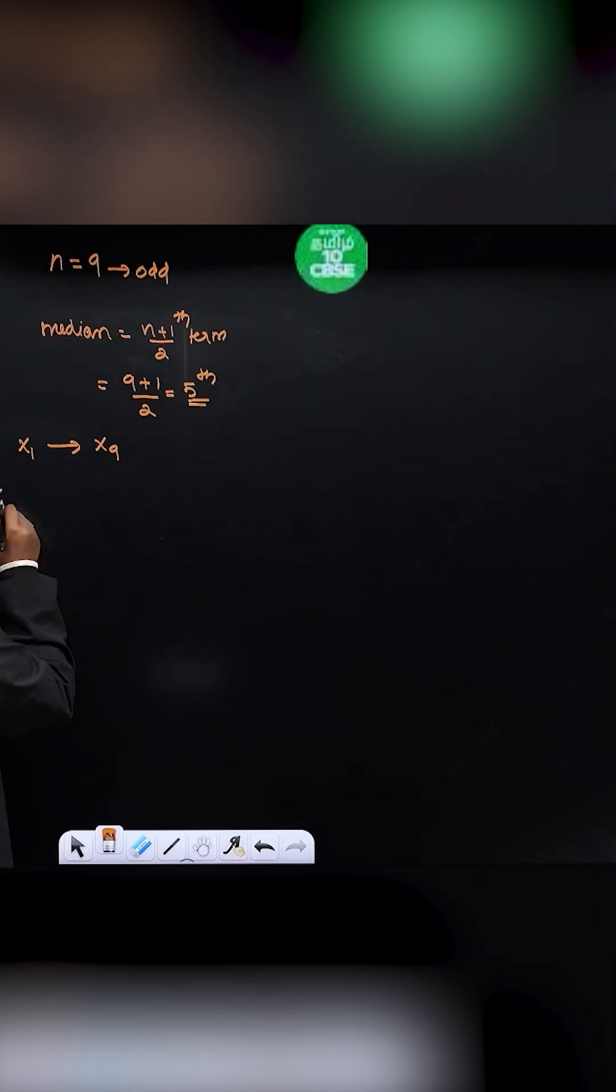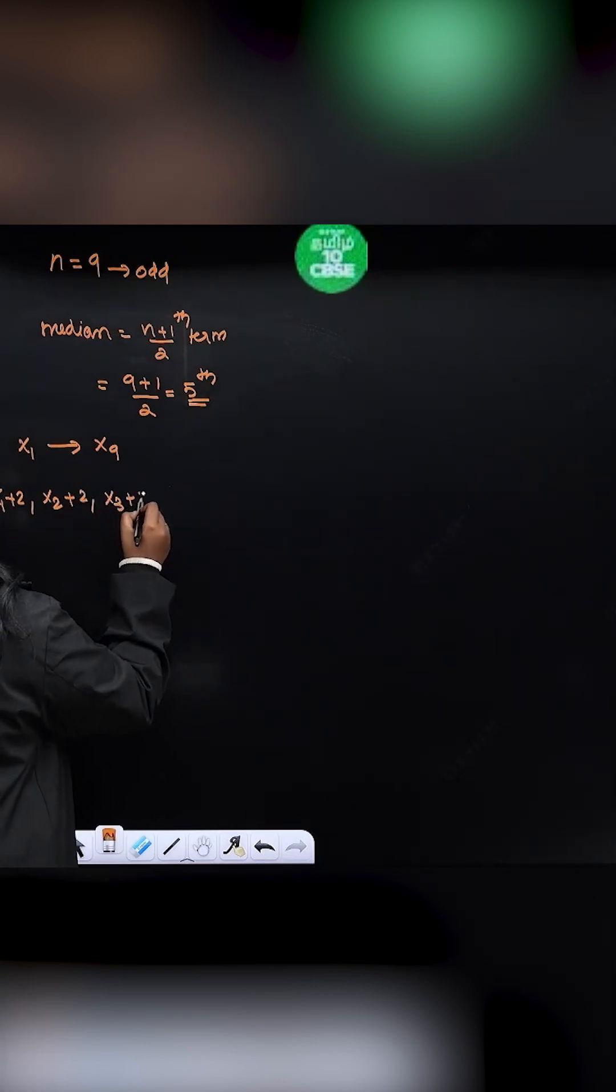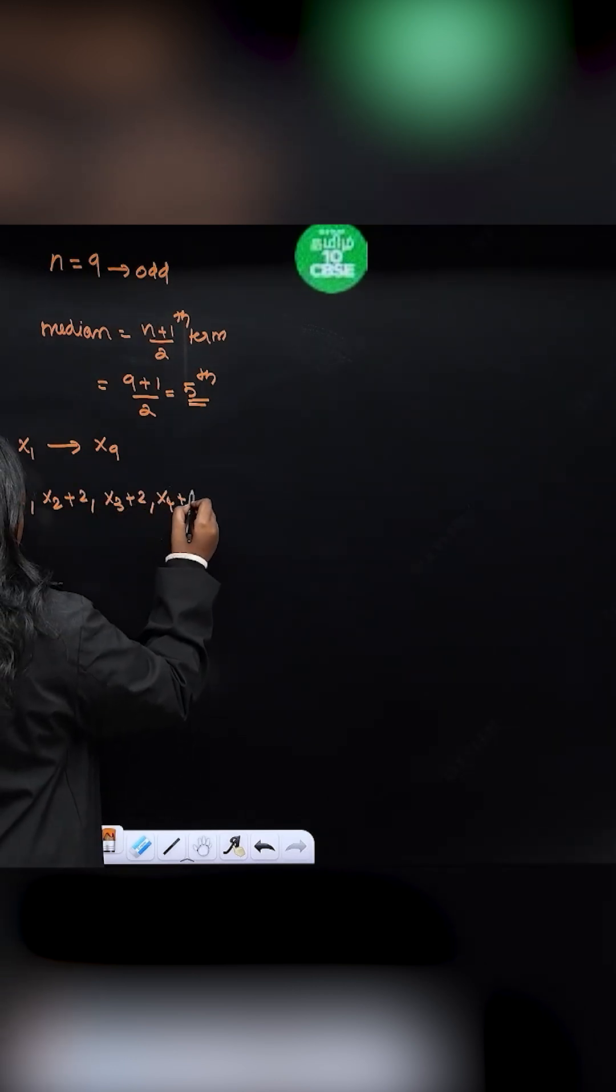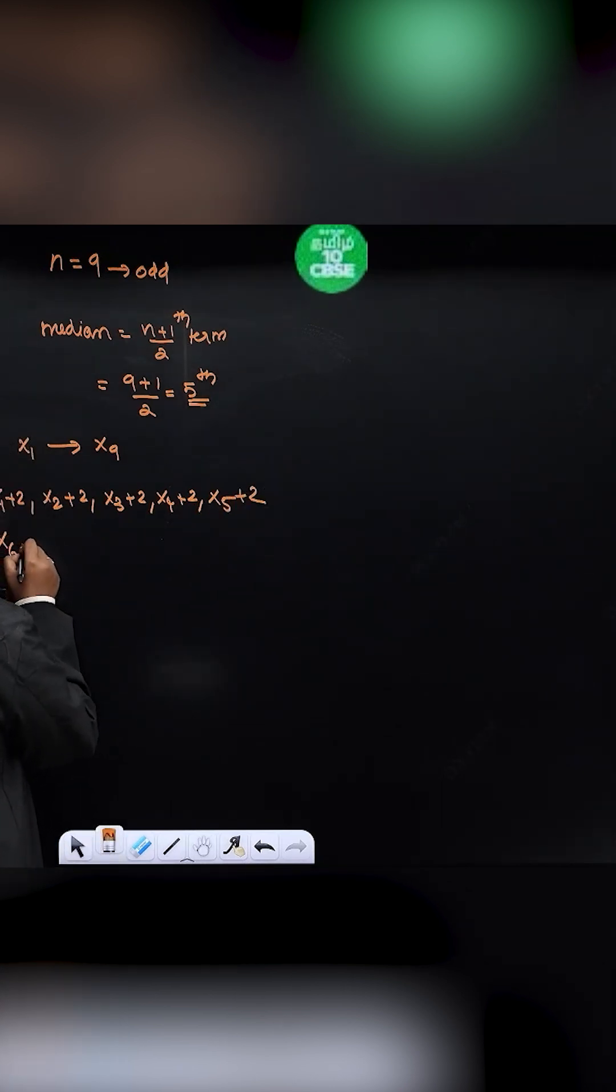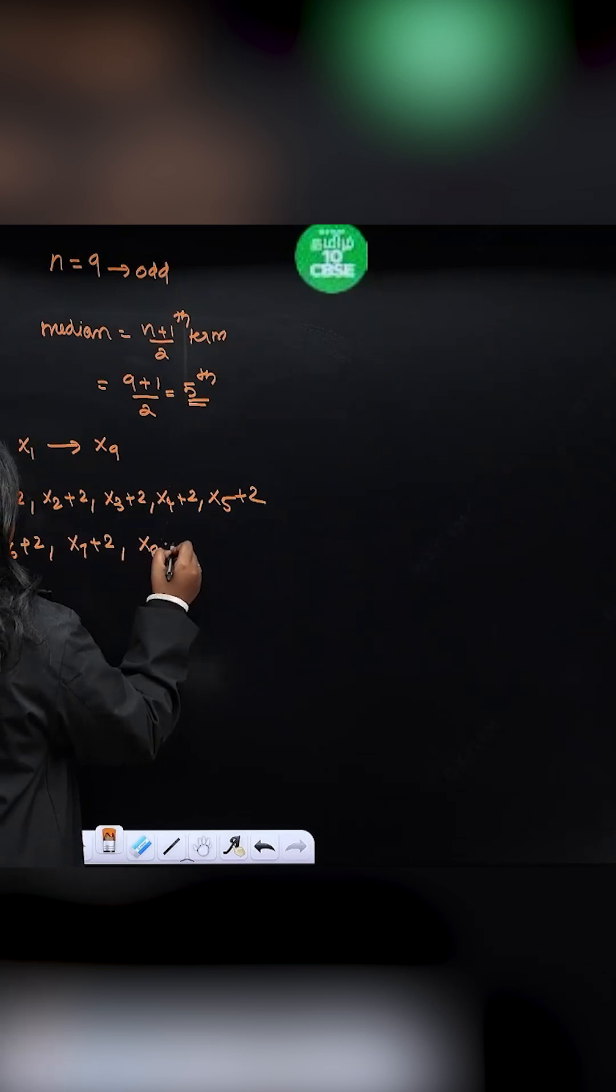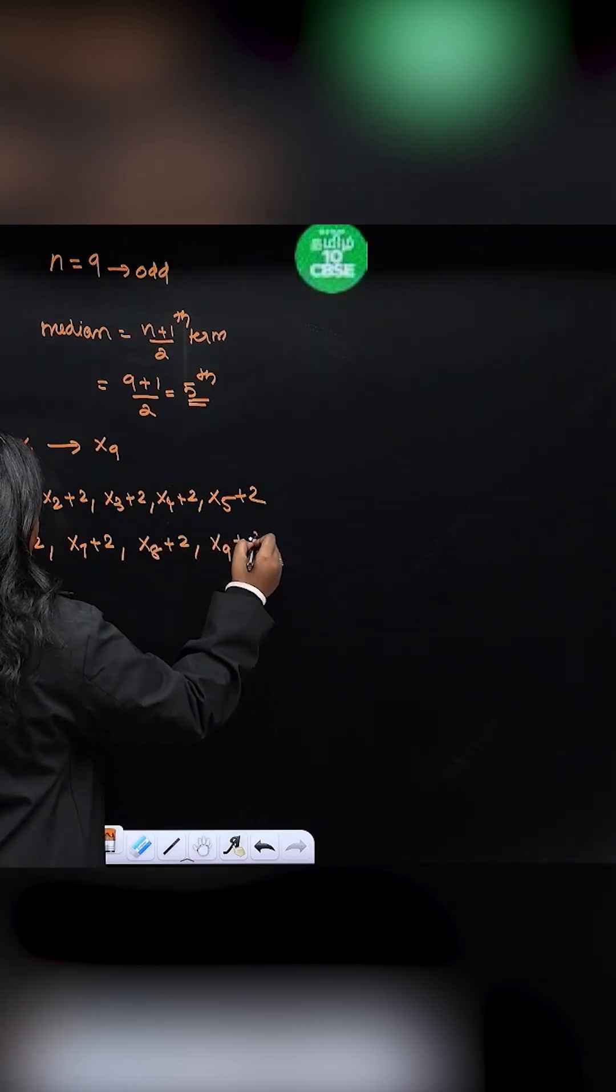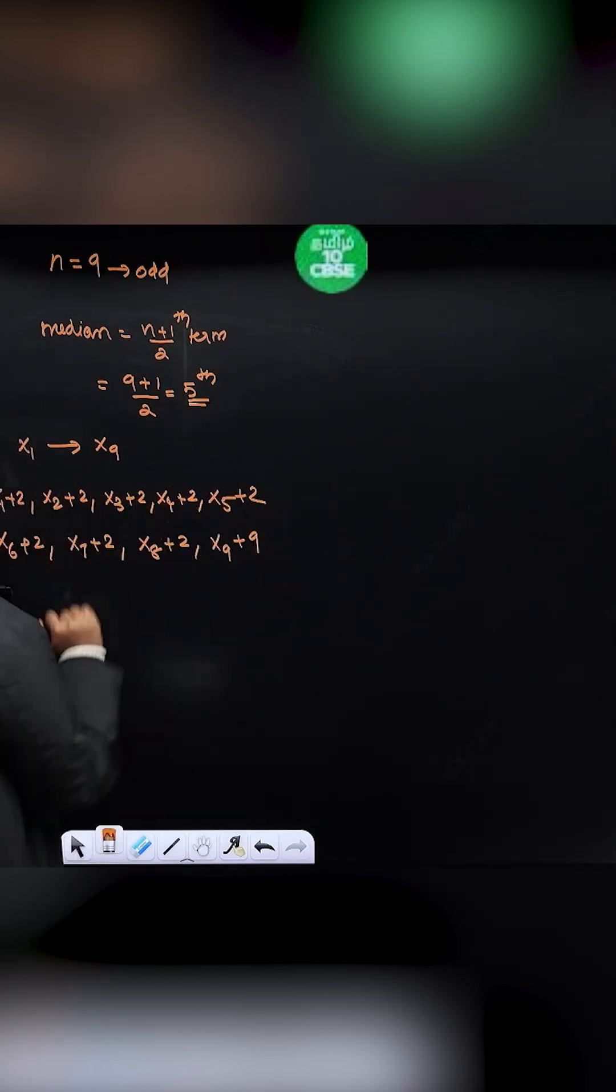So you have x1 plus 2, x2 plus 2, x3 plus 2, x4 plus 2, x5 plus 2, x6 plus 2, x7 plus 2, x8 plus 2, and x9 plus 2. Okay? So these are the observations.